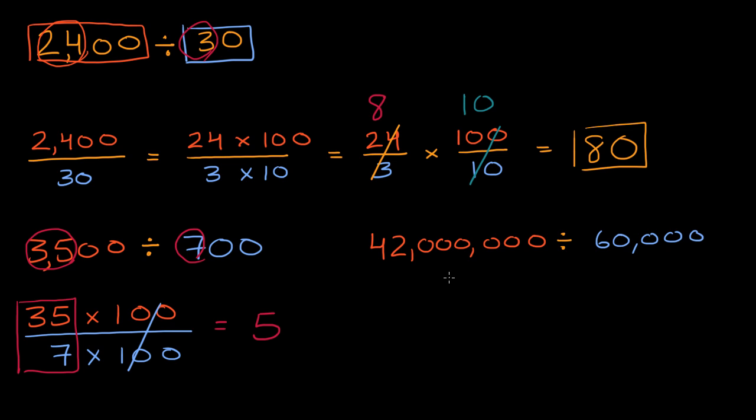Well, using the notions that we just talked about, you could say 42 divided by 6 is going to be 7, and then over here I have six zeros, so we're talking about millions, and I'm going to divide by four zeros, which is 10,000. So if you have millions with six zeros, and you divide by 10,000 with four zeros, six minus four is going to be two, so your answer is going to have two zeros in it. So this is going to be equal to 700.